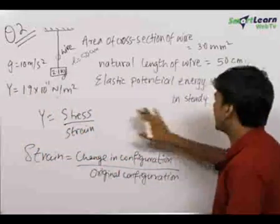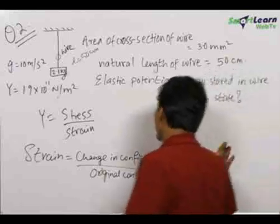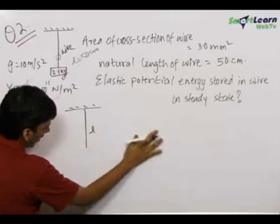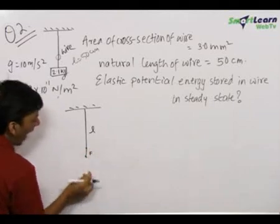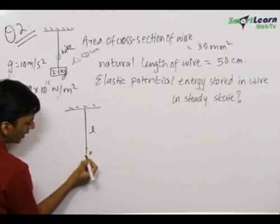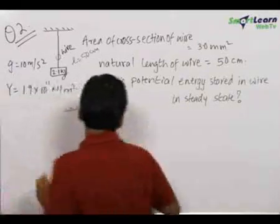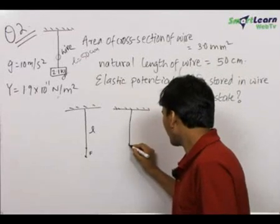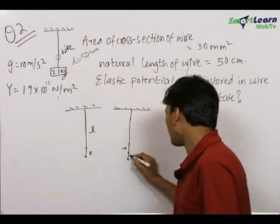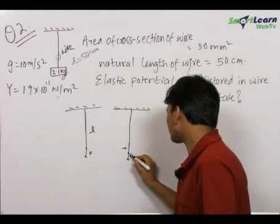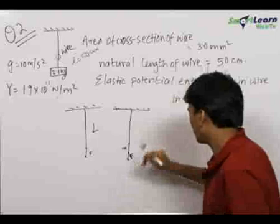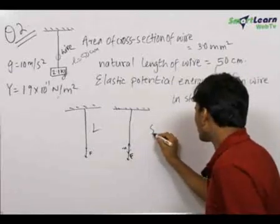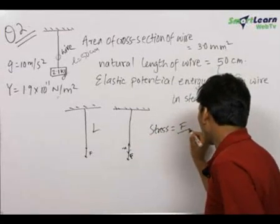Let us find out the formula for the elastic potential energy stored in the wire. Let the natural length of this wire be L, and there is an external force F acting on this wire in the downward direction, due to which the wire starts experiencing extension. Let this wire already be extended by x with force F still acting. The extension in the wire is x, and the stress in the wire is F upon A.